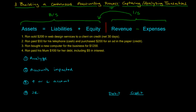The next transaction is number two. Ron paid $50 for his telephone bill in cash, and he also purchased $200 for an ad in the paper, but he bought it on credit. This is a bit more complicated — there are a number of accounts impacted. On the expense side, because he's paying for a telephone expense, that would be the telephone expense account. He paid in cash, which is an asset account, so that impacts cash. The second part involves advertising expense.